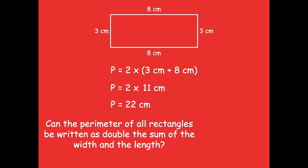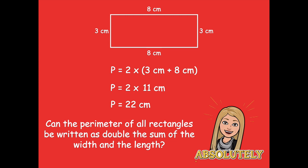Can the perimeter of all rectangles be written as double the sum of the width and the length? All that's saying is: if we take the sum of two adjacent sides — like the 3 and the 8 — and double it, is that going to be the same for all rectangles? Absolutely, because all rectangles have opposite sides that are equal. So if you just add two of those sides together and double it, you'll get your perimeter.